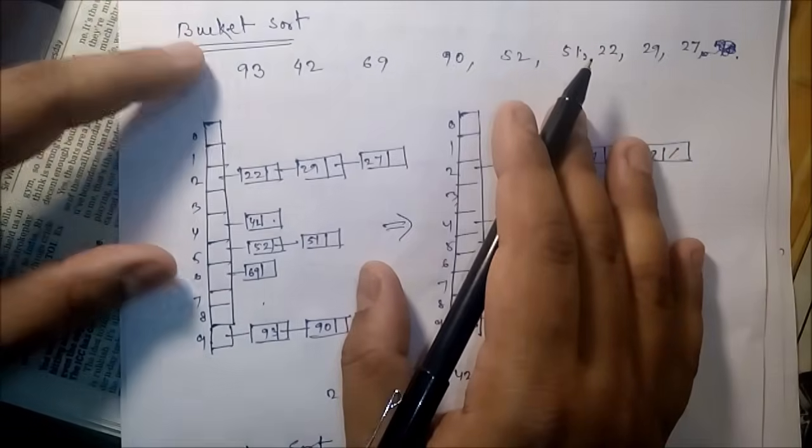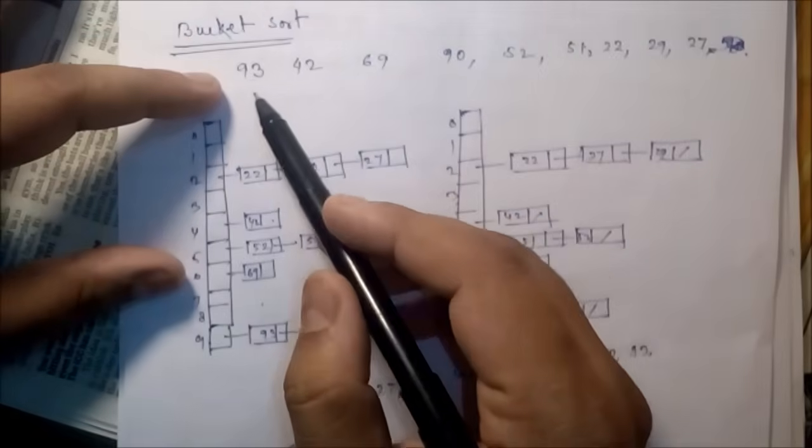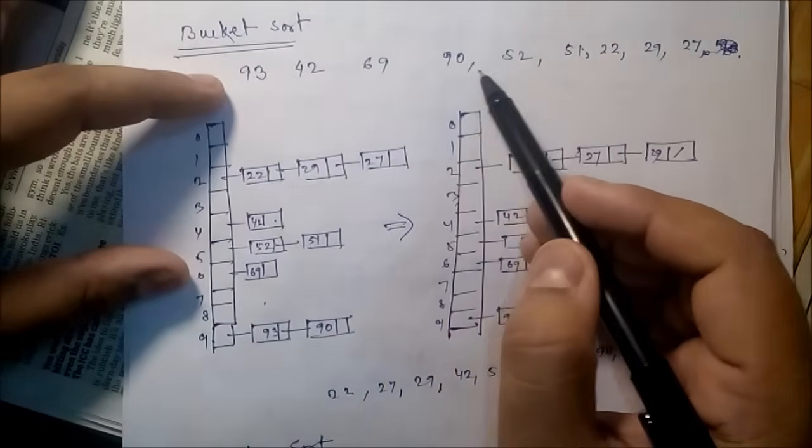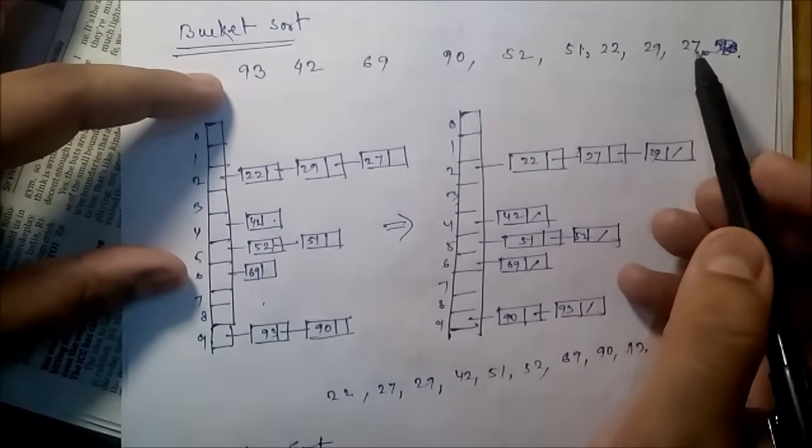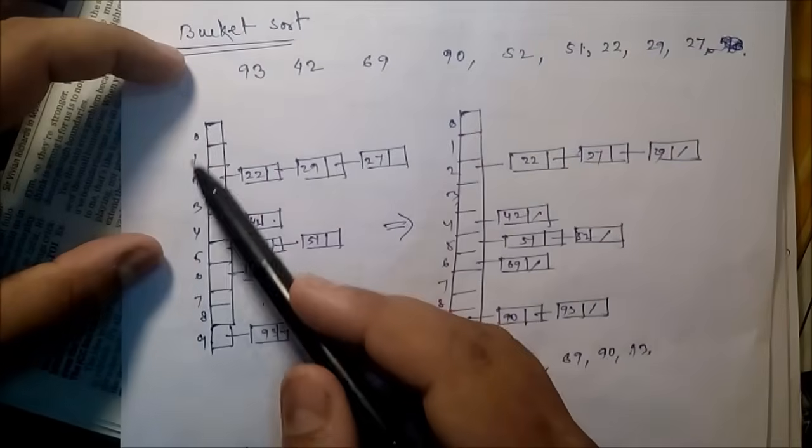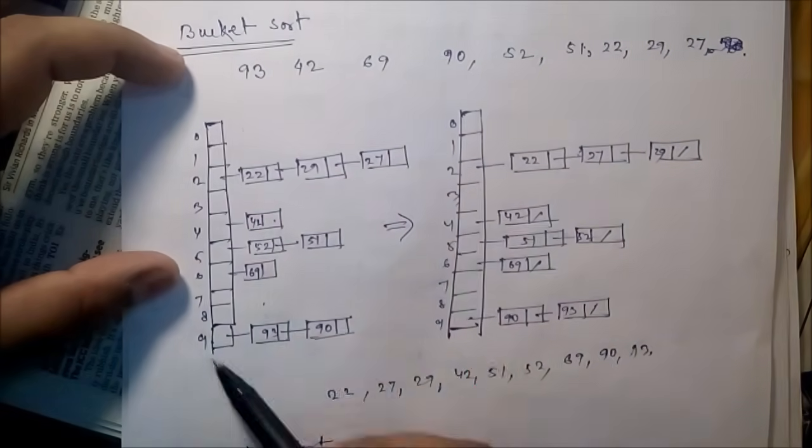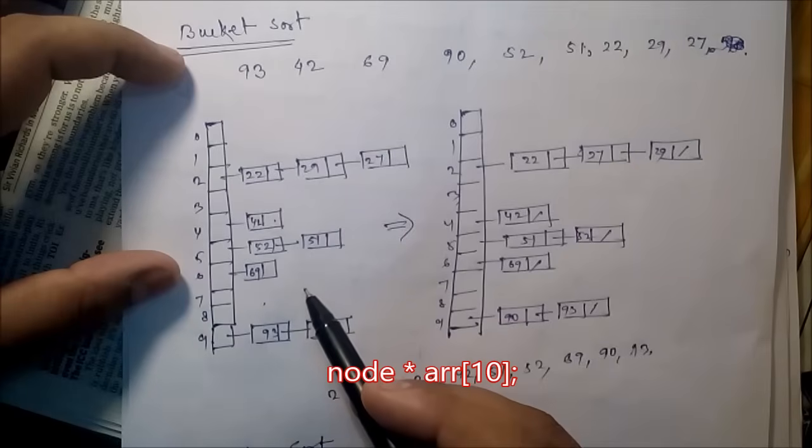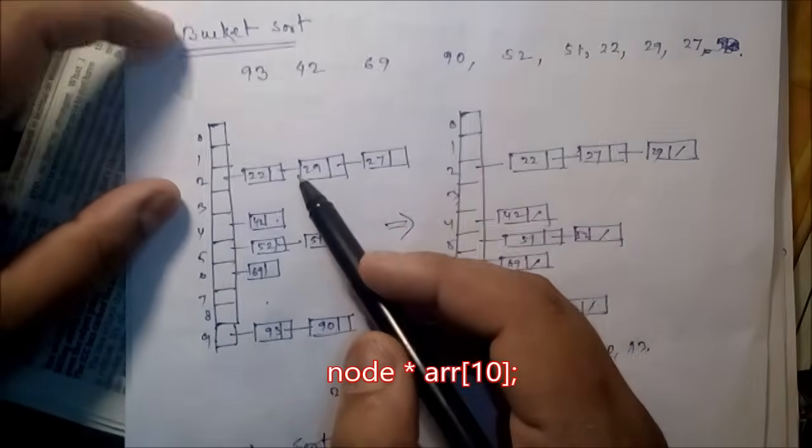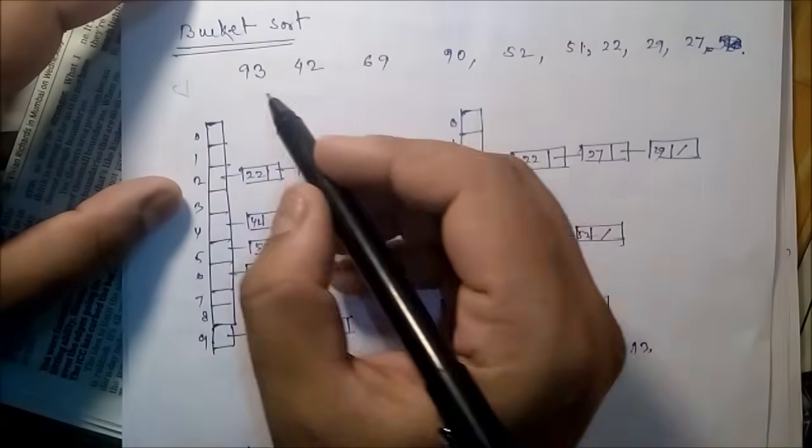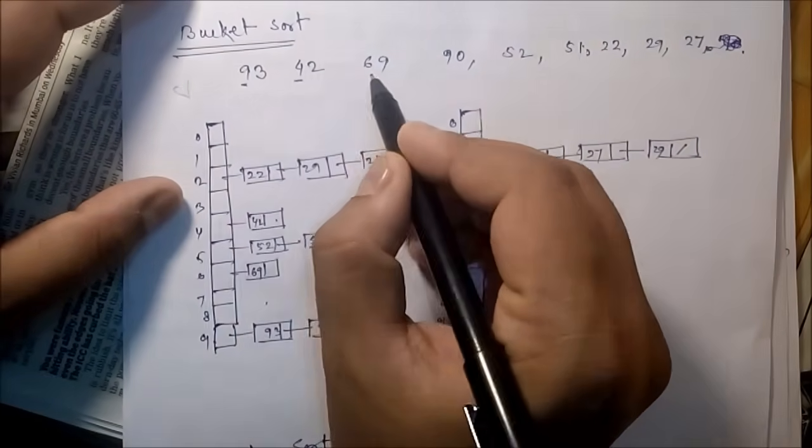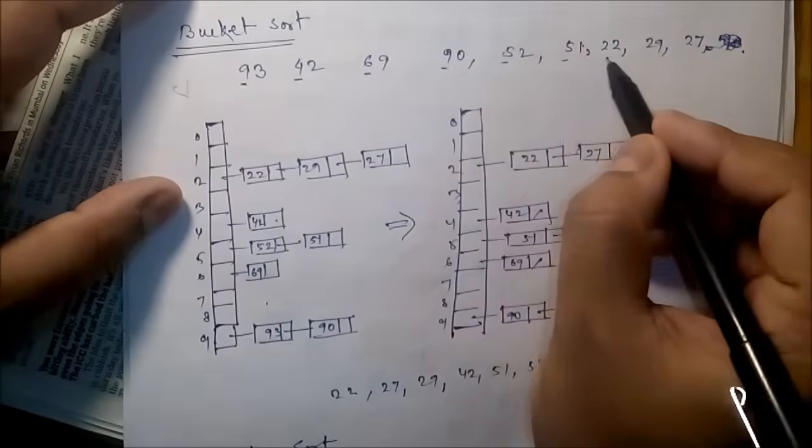Now bucket sort. Suppose we have data: 93, 42, 69, 90, 52, 51, 22, 29, 27. We create one array where we can store addresses of the other nodes. Now you see this digit, this particular part.